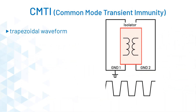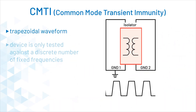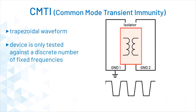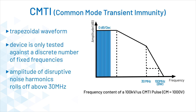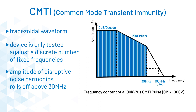CMTI is one method for measuring noise immunity of digital isolators, but trapezoidal waveforms are frequency limited and decrease in amplitude significantly above 100 MHz.